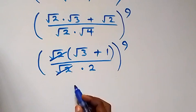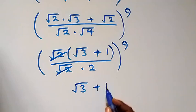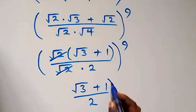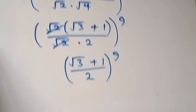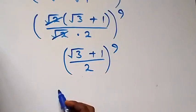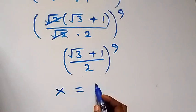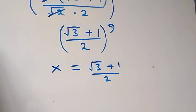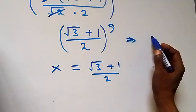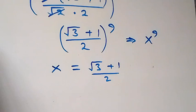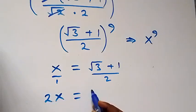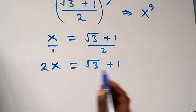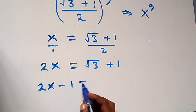Then we are left with (root 3 plus 1) over 2, raised to power 9. Let's represent what we have inside as x, so x equals (root 3 plus 1) over 2. From here, we want to find x to the power 9. Let's cross multiply: 2x equals root 3 plus 1.